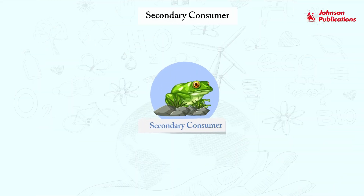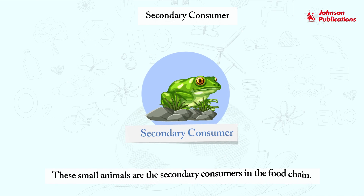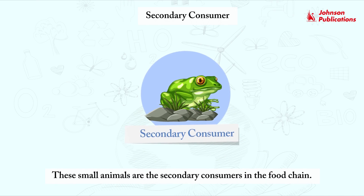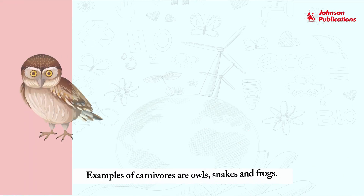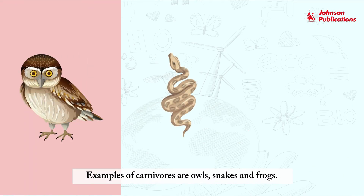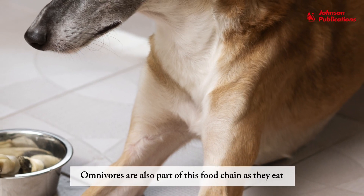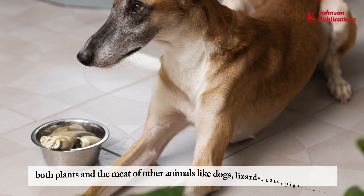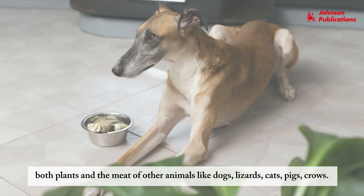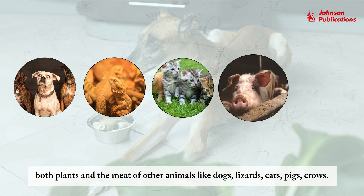Secondary consumers: the primary consumers are eaten by small carnivore animals. These small animals are the secondary consumers in the food chain. Examples of carnivores are owls, snakes and frogs. Omnivores are also part of this food chain as they eat both plants and the meat of other animals, like dogs, lizards, cats, pigs and crows.